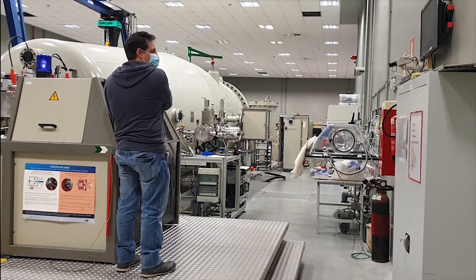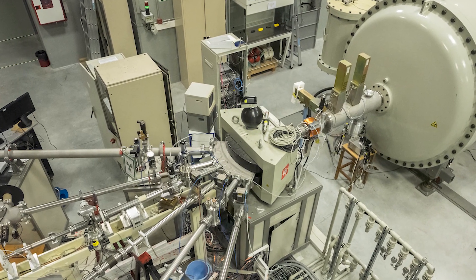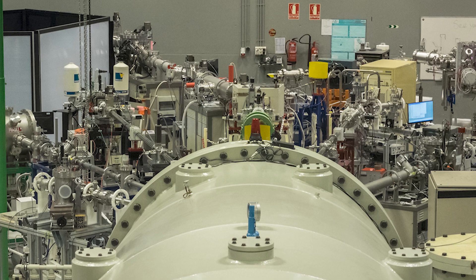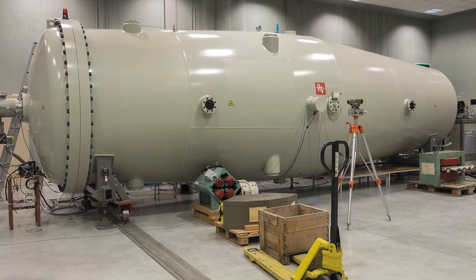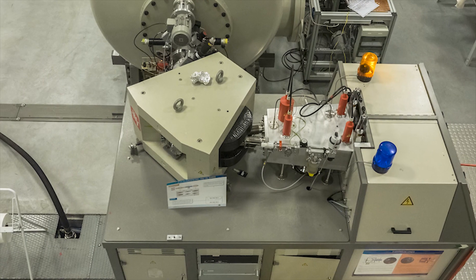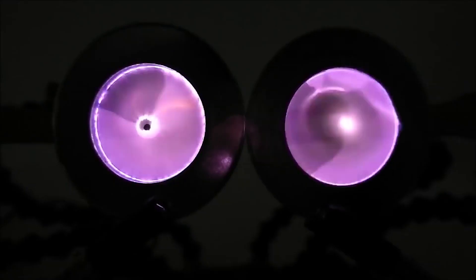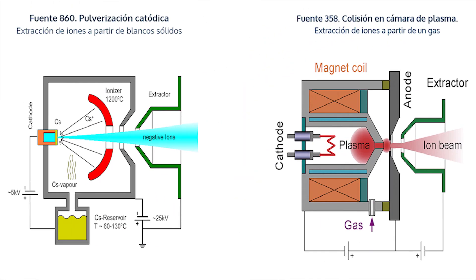Este es nuestro acelerador. Aunque hay muchas partículas que pueden acelerarse, nuestro acelerador está pensado para acelerar iones. Todo empieza aquí, en las fuentes. Cuando los iones son ligeros, como el hidrógeno o el helio, usamos la fuente de plasma, que se crea a partir de una descarga en un gas. Cuando los iones son pesados, como el cobre o el oro, usamos una fuente de pulverización, que ioniza los átomos a partir de un blanco sólido.